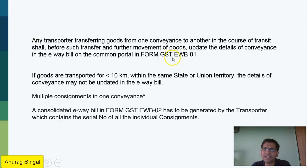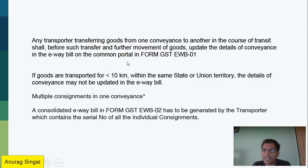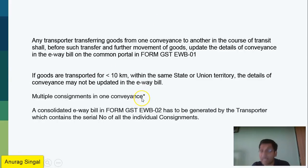First, GSTN EWB-01: if the goods are transferred to another conveyance, you can update the vehicle details. Within 10 km, if you don't have details of the conveyance yet, you can still proceed. If you have multiple consignments in one conveyance, then you generate a consolidated e-way bill — this is for part loading scenarios.